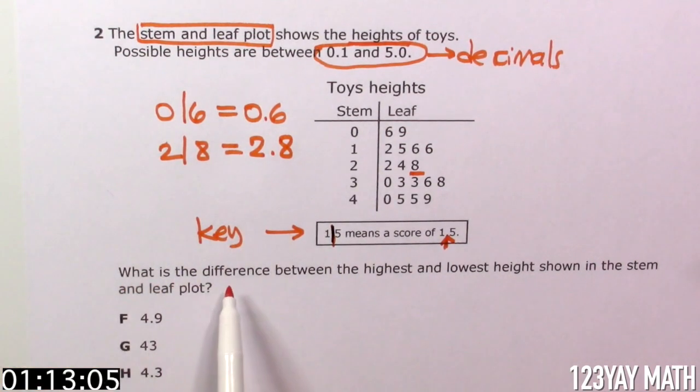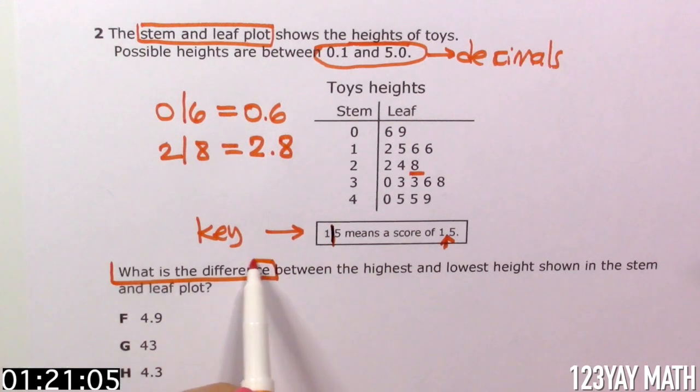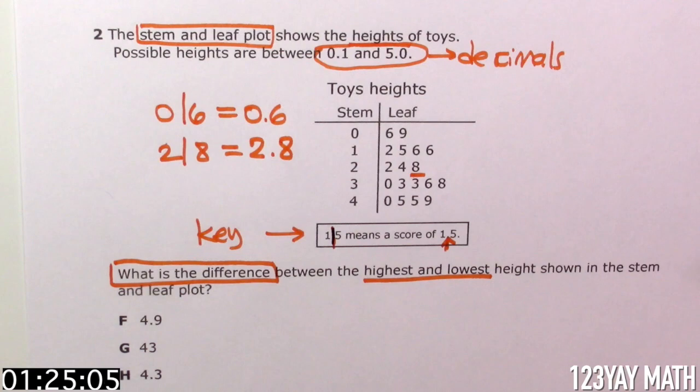Let's keep reading. What is the difference between the highest and lowest height shown in the stem and leaf plot? It says what's the difference between the highest and lowest heights. What do we do now?